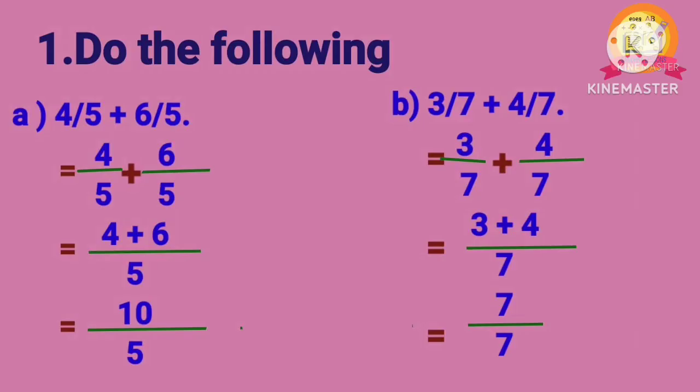Problem B: 3 by 7 plus 4 by 7. The denominators of both fractions are the same, so after adding, we get 7 by 7.